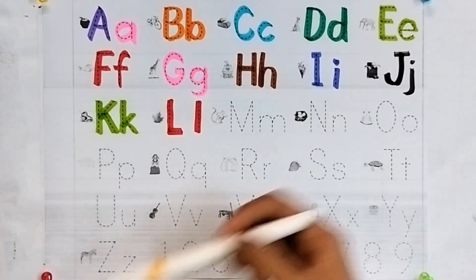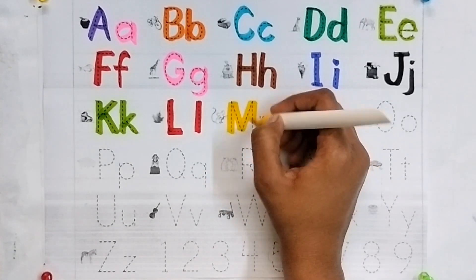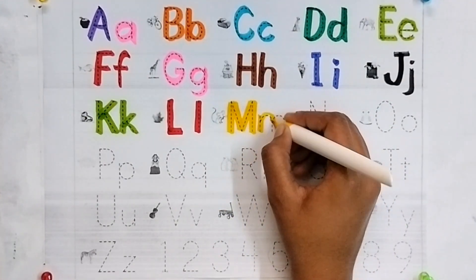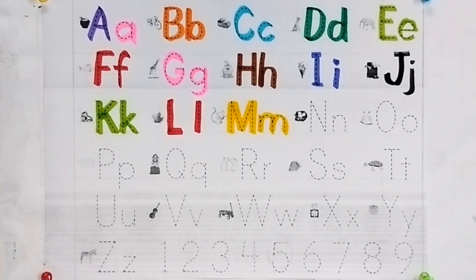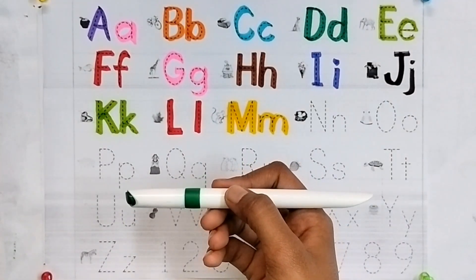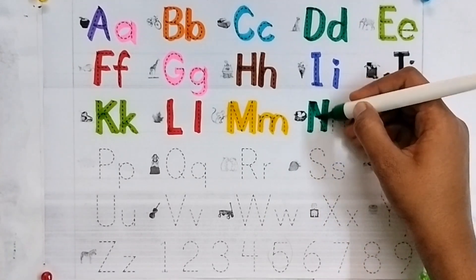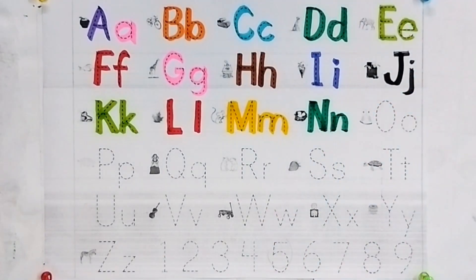Yellow color. M. M for moon. Small m. M for mouse.